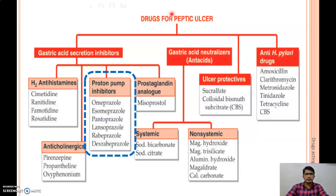We are discussing the drugs used for the treatment of peptic ulcer. In previous two videos we discussed the introduction to peptic ulcer as well as the pharmacology of H2 antihistamines. Here we will discuss the pharmacology of proton pump inhibitors like omeprazole, esomeprazole, pantoprazole, lansoprazole, rabeprazole and dexrabeprazole.